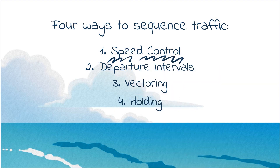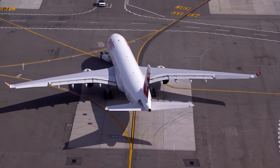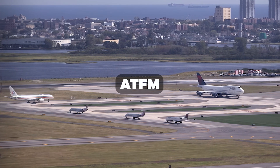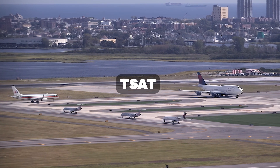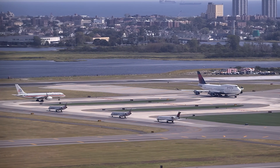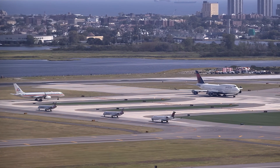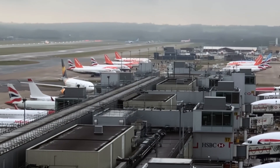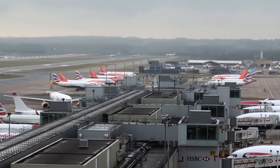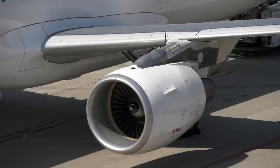Speed control we have covered already — if you missed that episode, go check out the video here. The second method for sequencing traffic is controlling the departures by time. If we go deep down into air traffic flow management with target startup approval times, target off-block times, and calculated takeoff times, this video would be at least an hour long. But here's the basic principle of departure flow control.